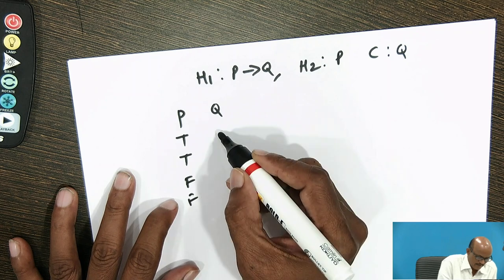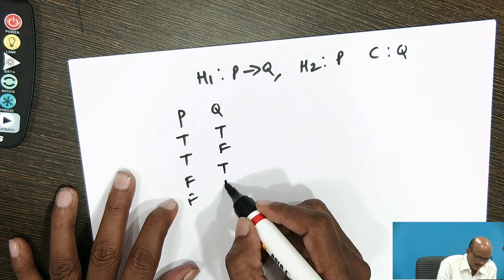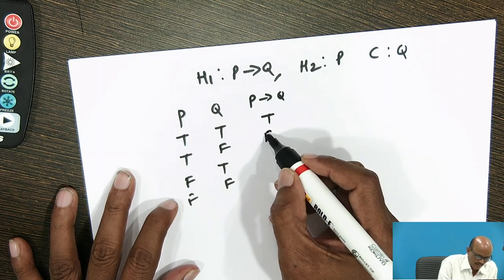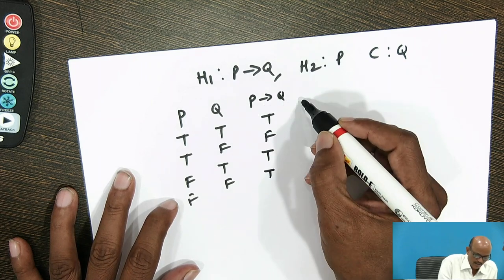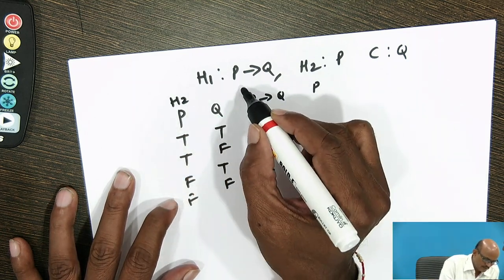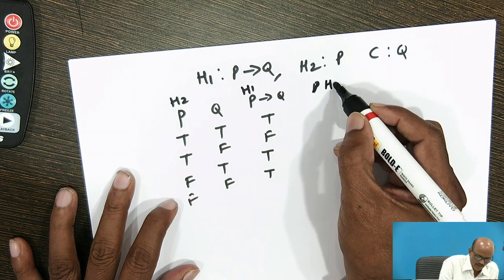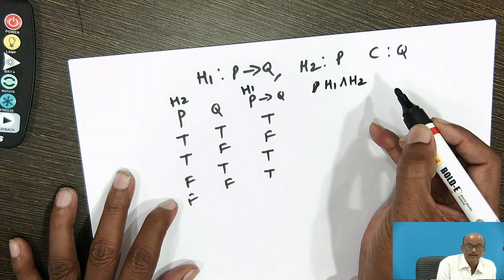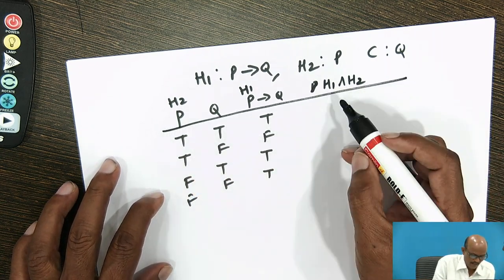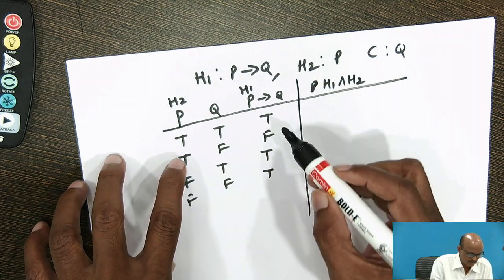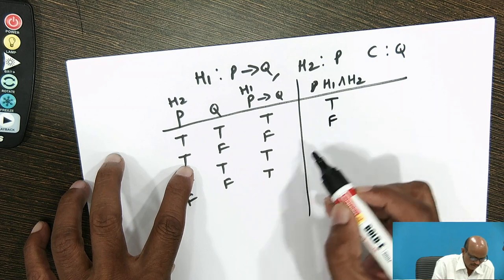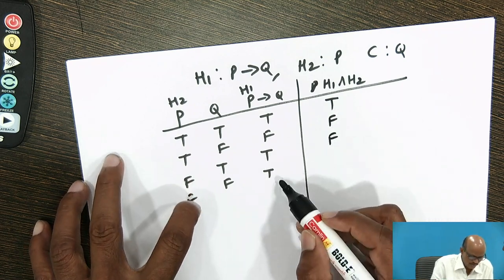The columns for P and Q take values T, T, F, F and T, F, T, F respectively. H1 (P → Q) evaluates to T, F, T, T. H2 is P, giving T, T, F, F. The combined column H1 ∧ H2 gives: T∧T = T, F∧T = F, T∧F = F, T∧F = F.